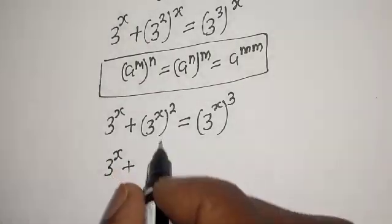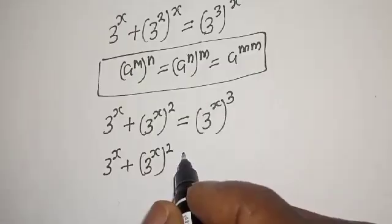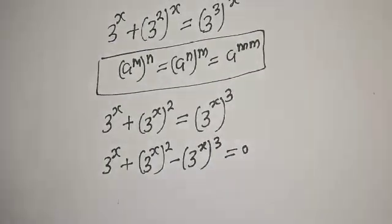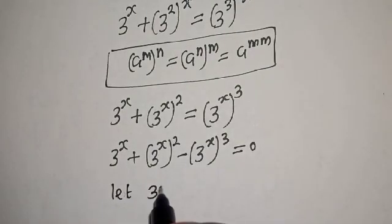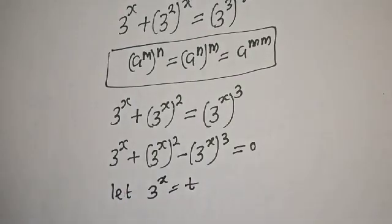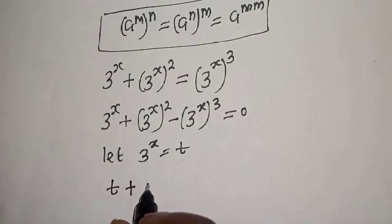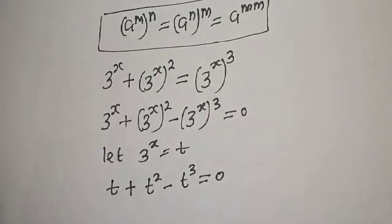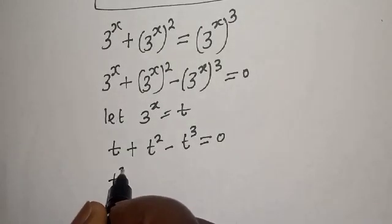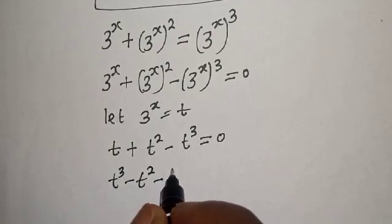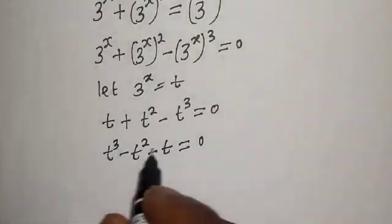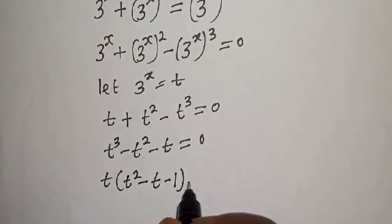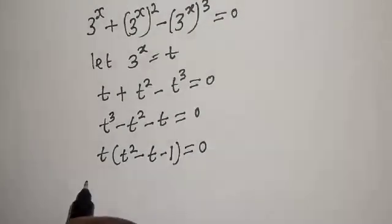We have 3 raised to power s plus 3 raised to power 2s. Let t equal 3 raised to power s. Substituting, we get t plus t squared minus t raised to power t equal to zero. Rearranging: t raised to power t minus t squared minus t equals zero. Factoring out t: t times bracket t squared minus t minus 1 equals zero.